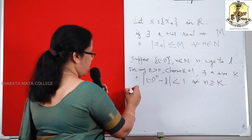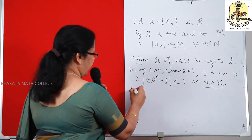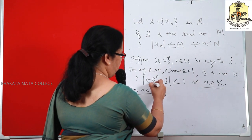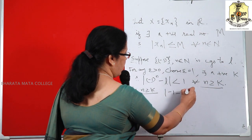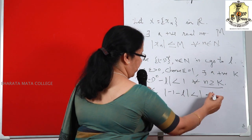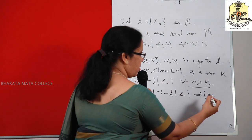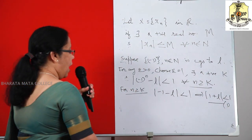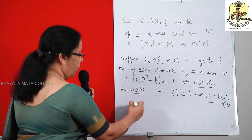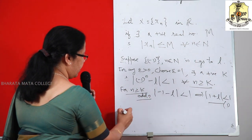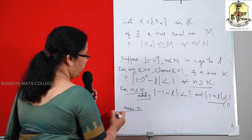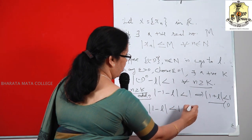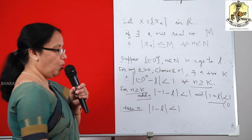We have two cases since N can be odd or even. For all odd N ≥ K, (-1)^N = -1, so the inequality becomes modulus of (-1 minus L) = modulus of (1 + L) less than 1. This gives 1 + |L| < 1, which is the first inequality. For all even N ≥ K, (-1)^N = 1, so the inequality becomes modulus of (1 minus L), which is less than 1. This is the second inequality.